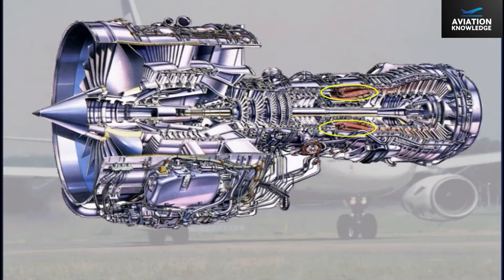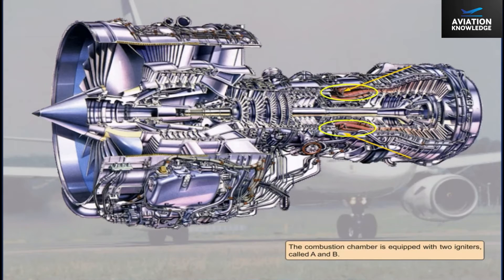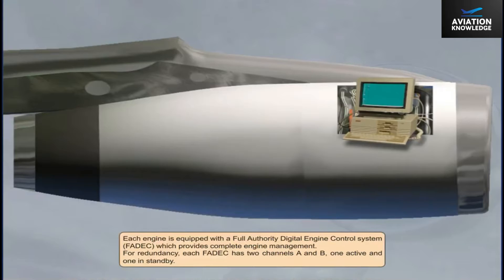The combustion chamber is equipped with two igniters called A and B. Each engine is equipped with a full-authority digital engine control system, FADEC, which provides complete engine management.